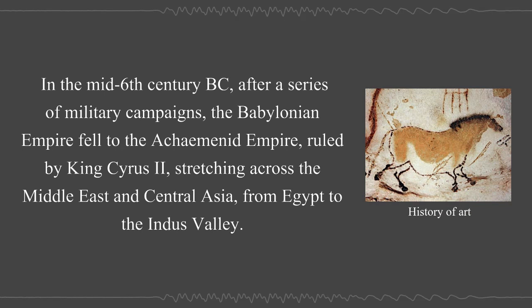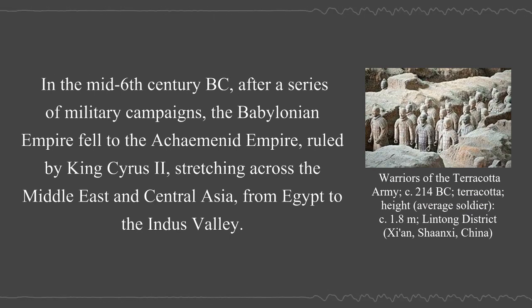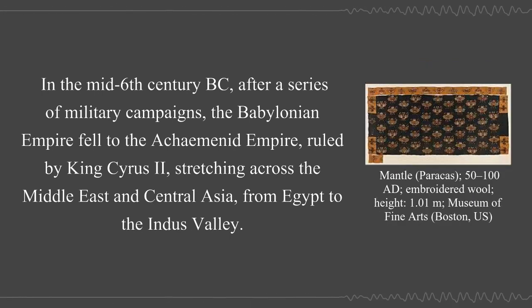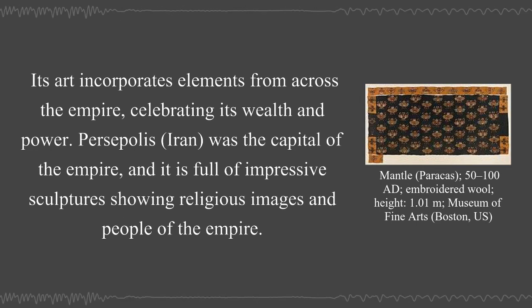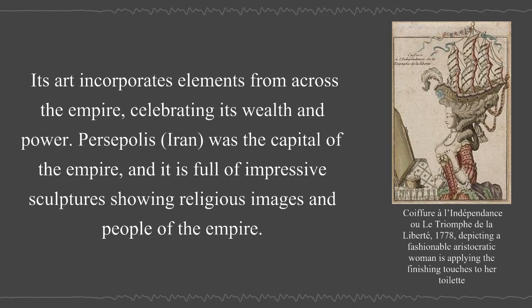In the mid-6th century BC, after a series of military campaigns, the Babylonian Empire fell to the Achaemenid Empire, ruled by King Cyrus II, stretching across the Middle East and Central Asia, from Egypt to the Indus Valley. Its art incorporates elements from across the empire, celebrating its wealth and power. Persepolis, Iran, was the capital of the empire, full of impressive sculptures showing religious images and people of the empire.